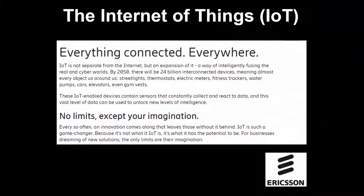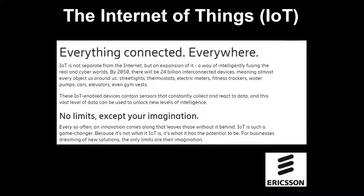It's always useful to start with a definition. I like this description from Ericsson: everything connected everywhere. The important point is that the Internet of Things is not separate from the internet — it's very much an evolution and expansion of it. As Ericsson say, no limits except your imagination. I want to look at the impact the IoT is having on us as individuals: in our homes, in business, in the urban environment, in healthcare, and more.